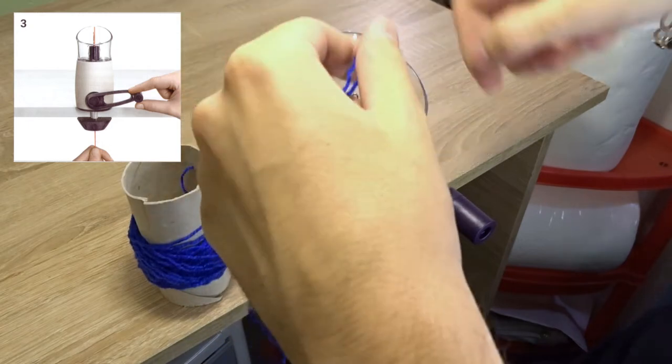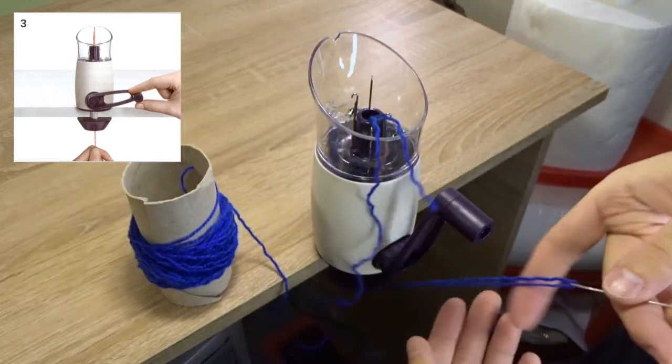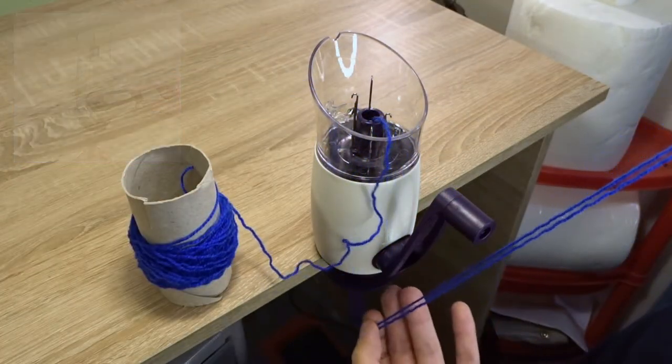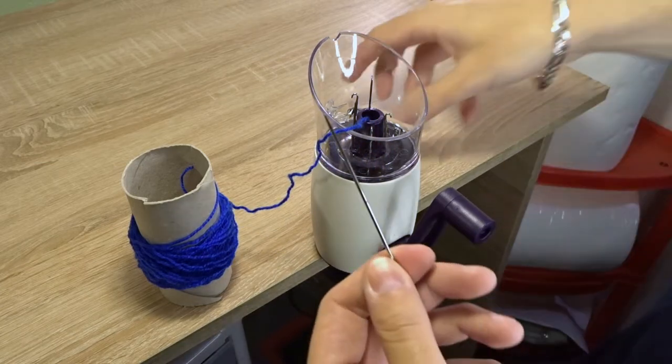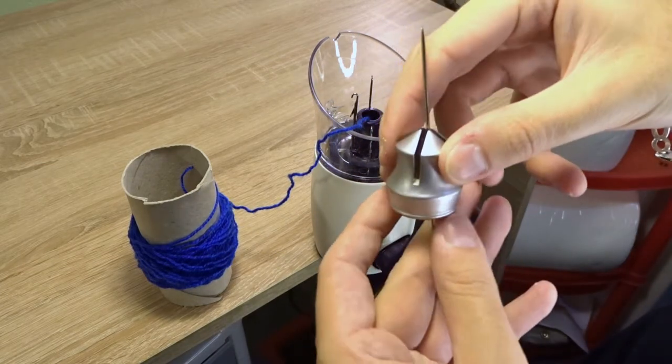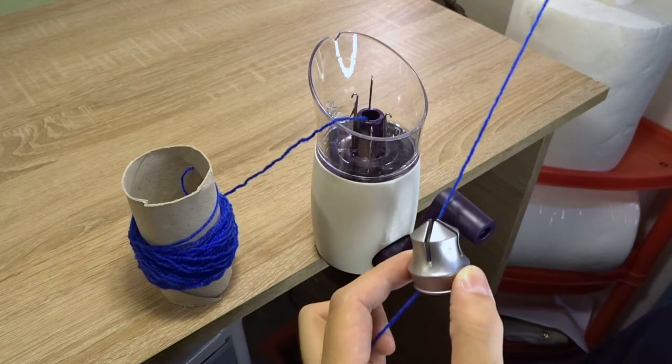Now drop the needle in the center of the mill and pull it out from the bottom. Pass the needle through the slots in the weight and tie the end of the yarn to it.